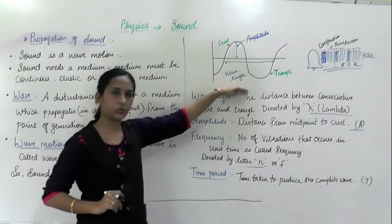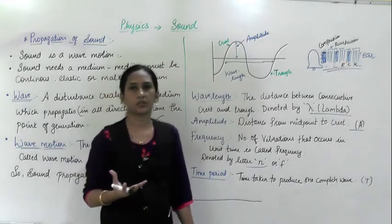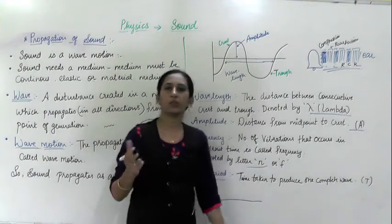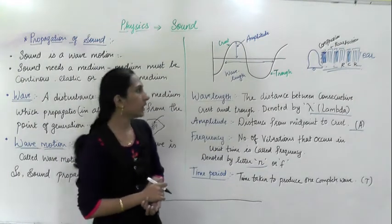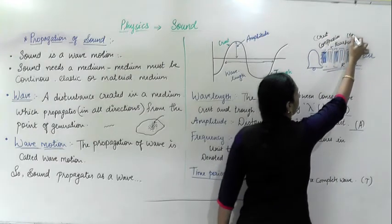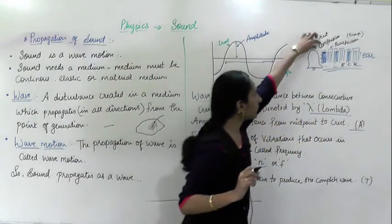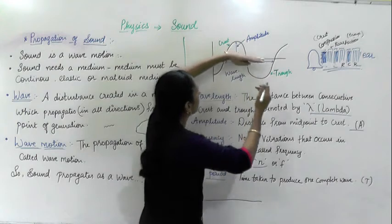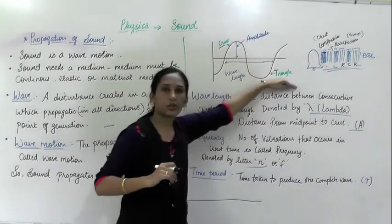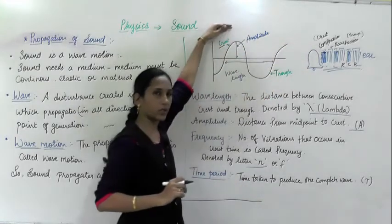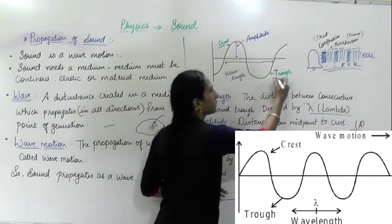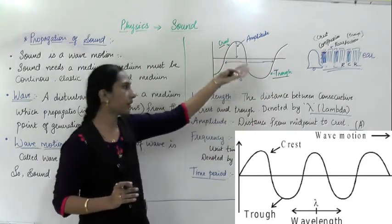Now we are going to study some concepts related to this. The first one is wavelength. The name itself suggests it is the length of a wave, or it can also be said as the distance between consecutive crest and trough. What is crest and trough? Compression means crest and rarefaction means trough. The part of the wave which comes above the line is called the crest, and the part drawn below the line is called the trough.